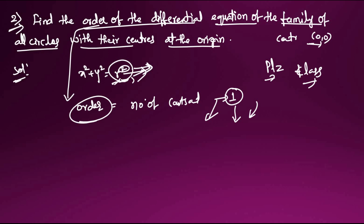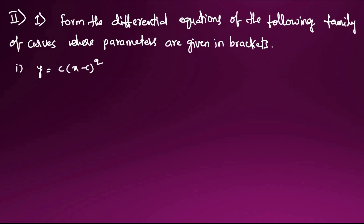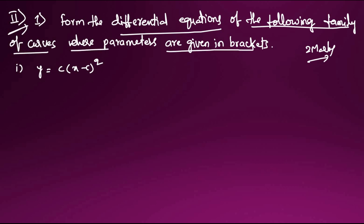Now moving to Section 2 — very important. You can expect two-mark questions from this section. Every problem and every step including derivations are very important here. First question: form the differential equation of the following family of curves where the parameters are given in brackets.